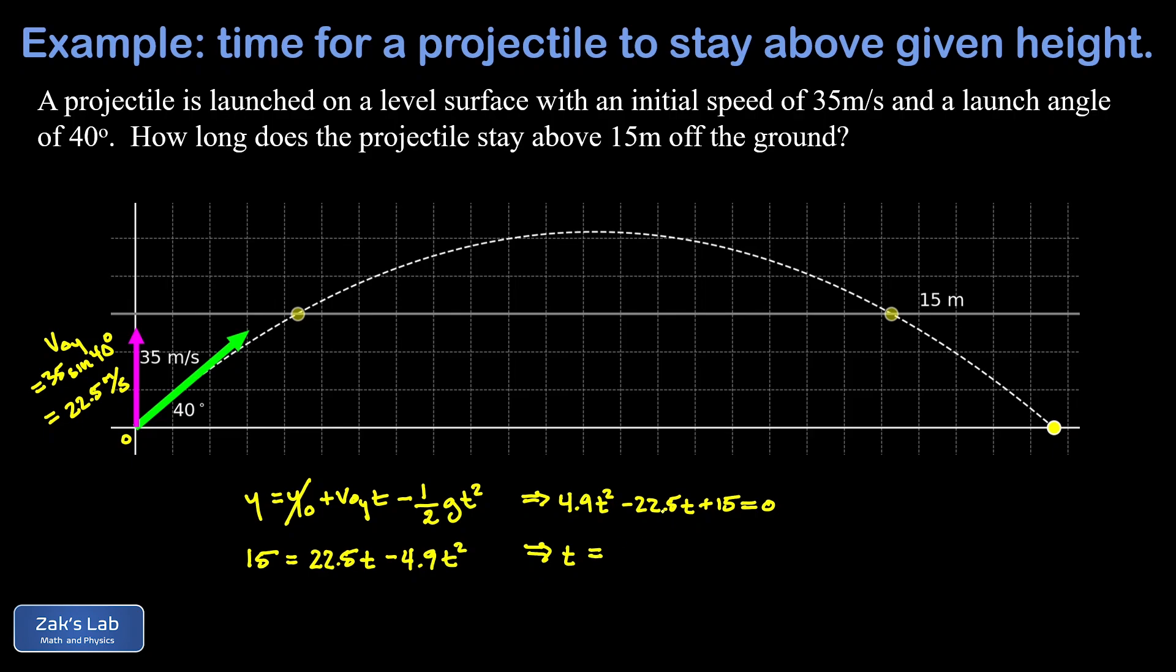And t is going to be negative b, the negative of the linear term coefficient, that's 22.5 plus or minus the square root of b squared. So I'm going to write 22.5 squared. Notice that I left the minus sign off that because I was going to square it anyway, which guarantees a positive answer.